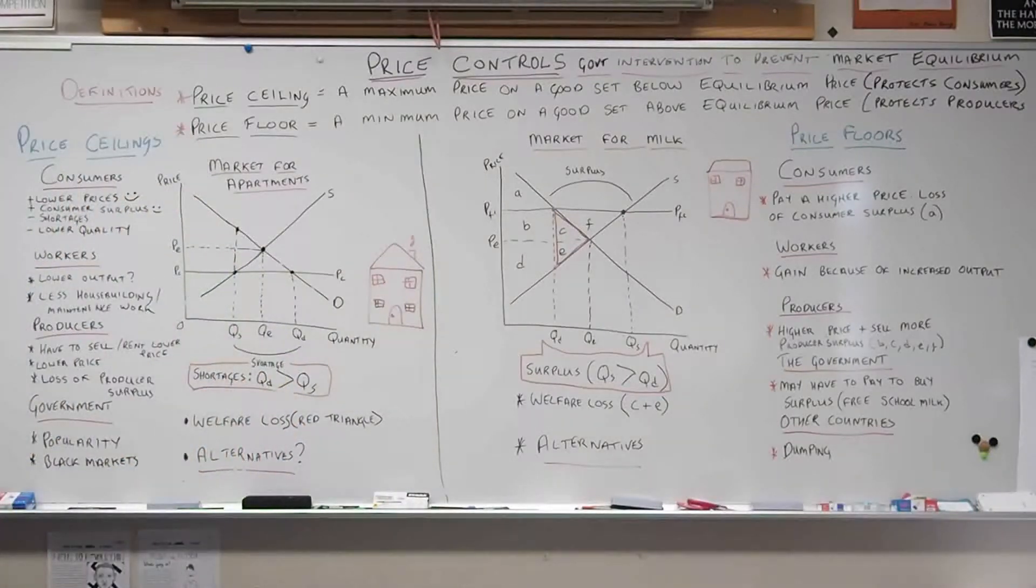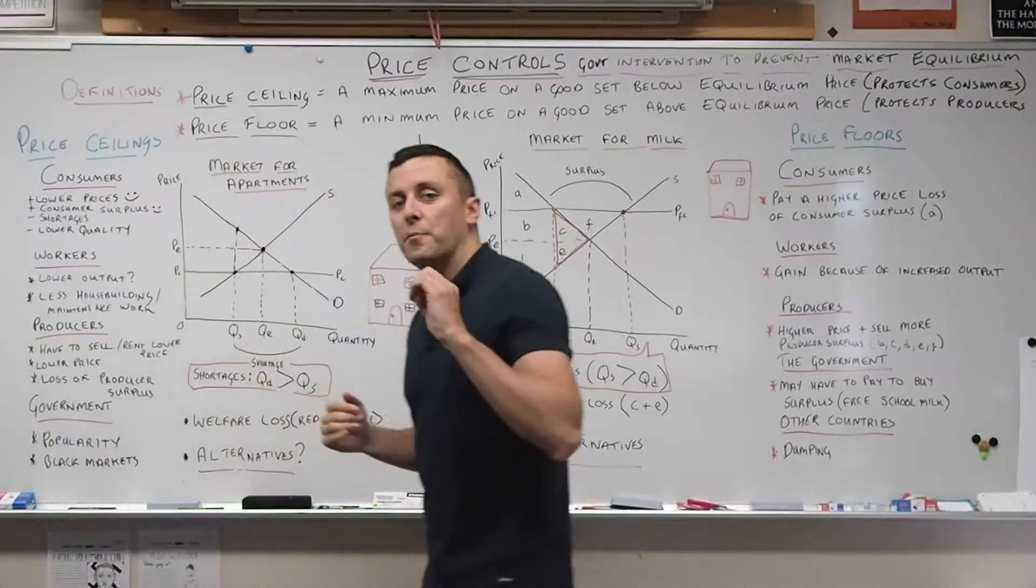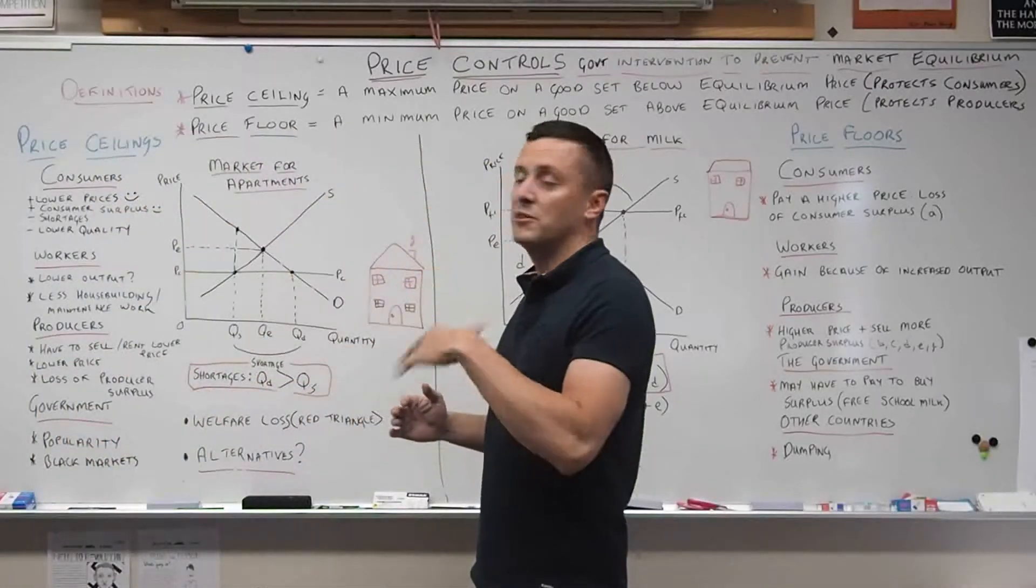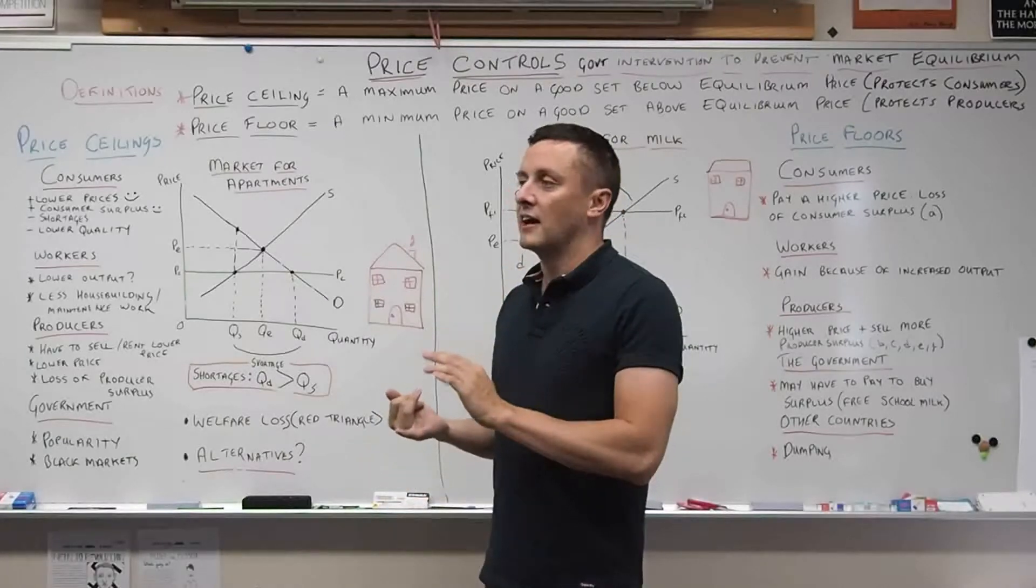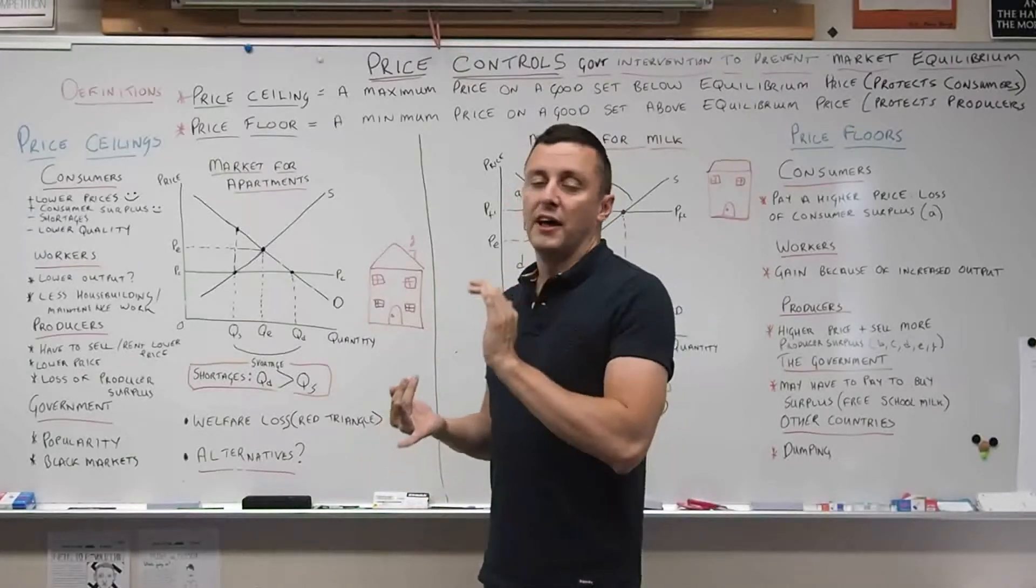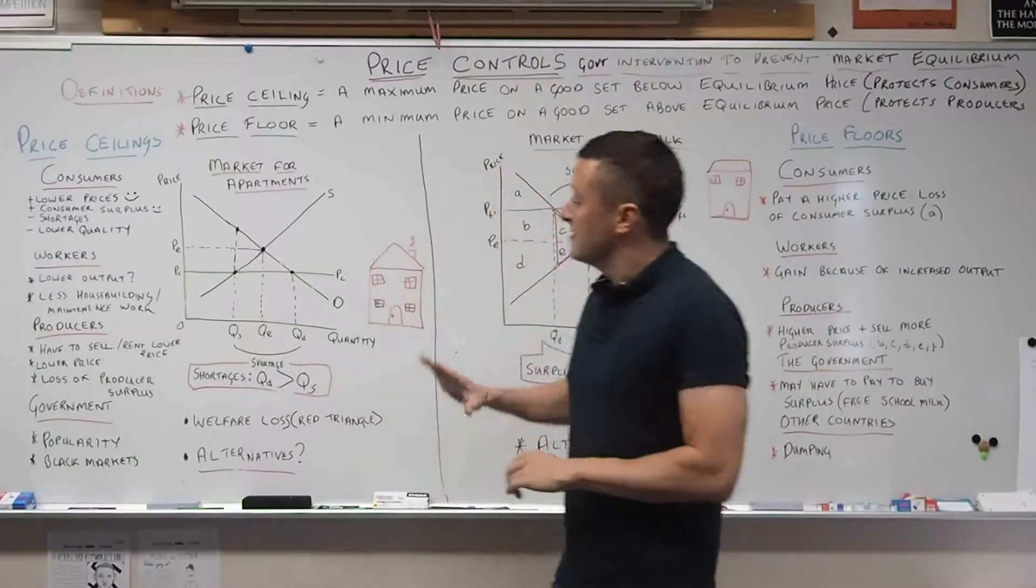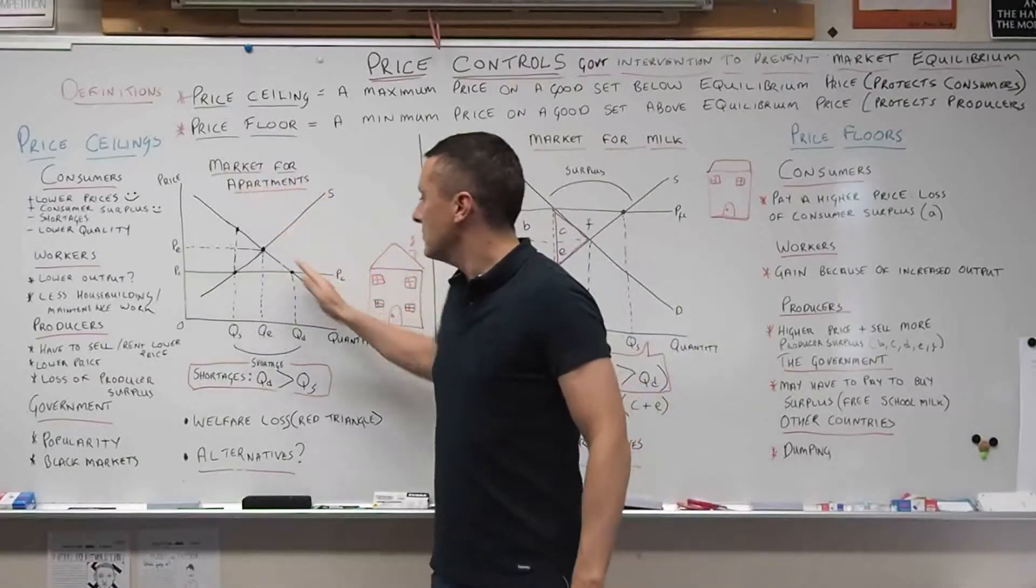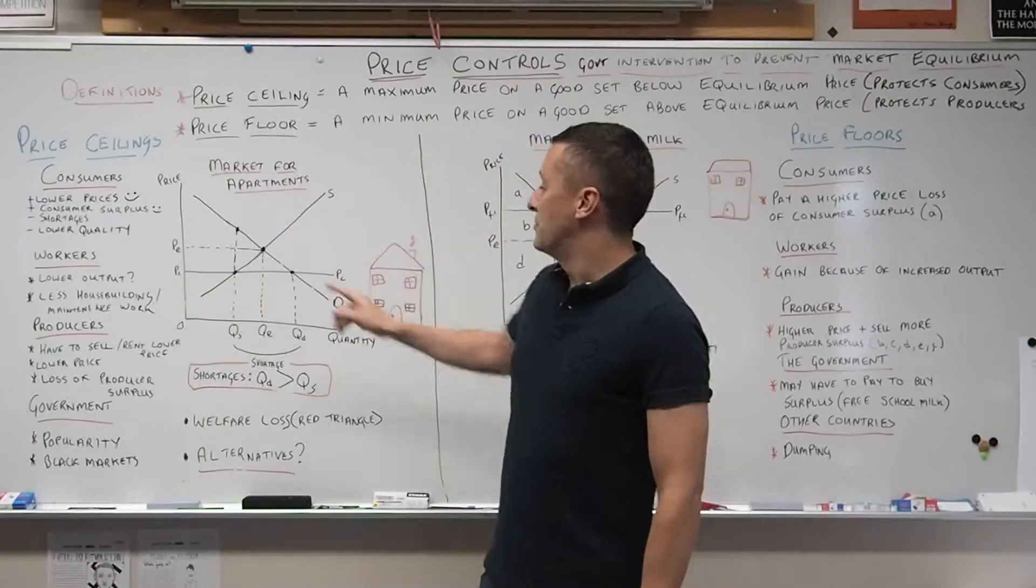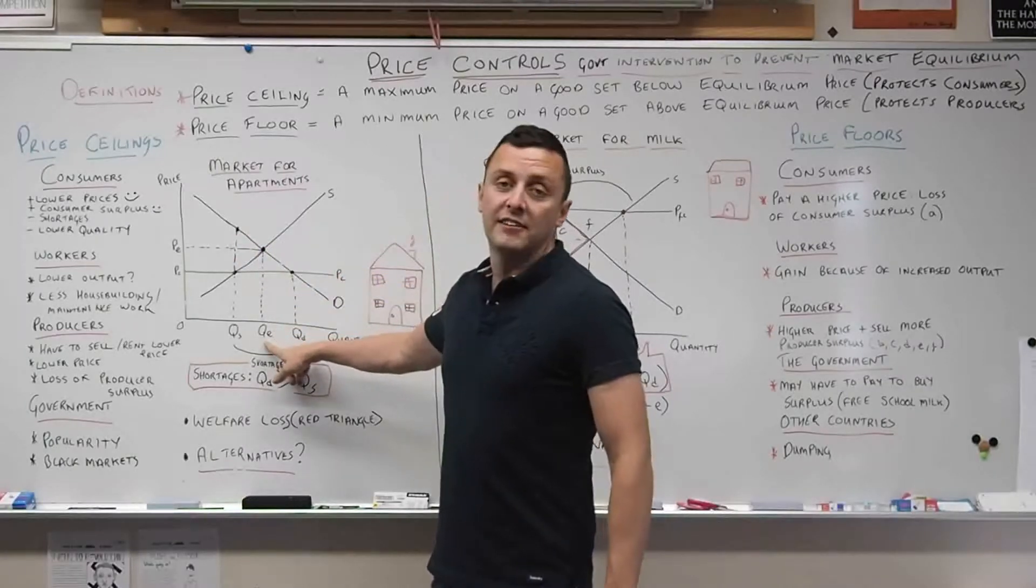As I said before, this is to protect the consumer. Price ceilings have been introduced on a whole range of products like gasoline and apartments, which is what we'll be looking at today. In this diagram, I've drawn a simple supply and demand graph with your equilibrium price and equilibrium quantity.